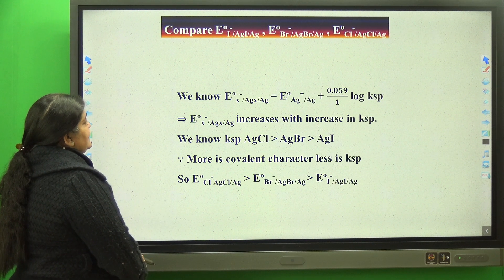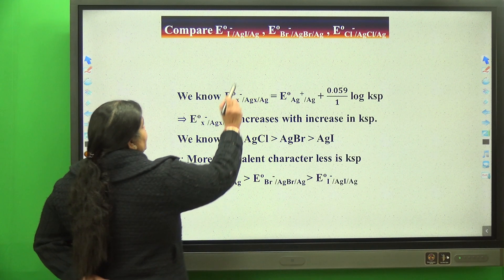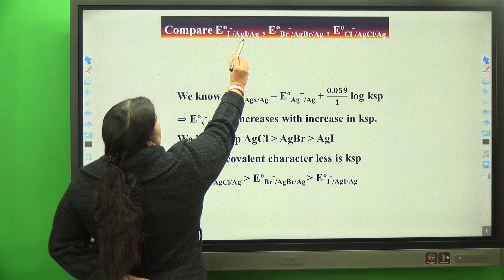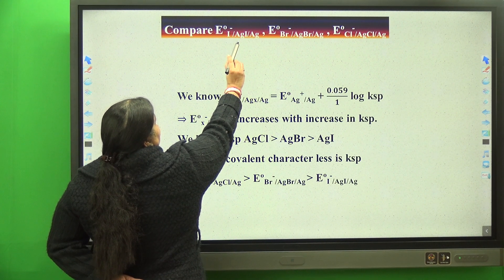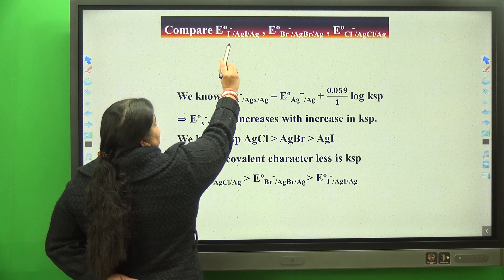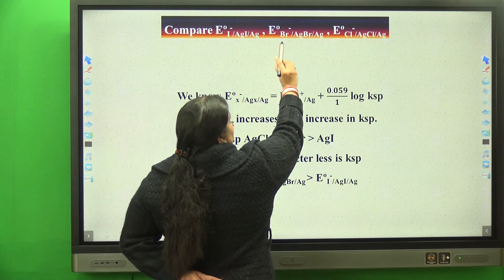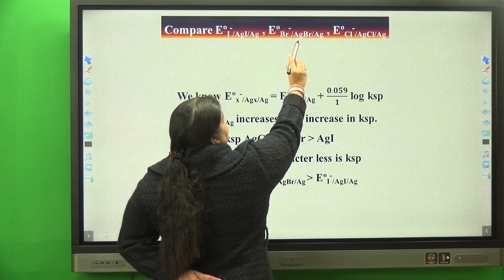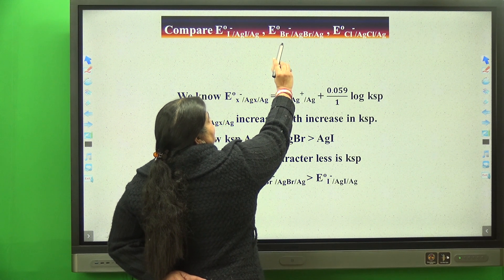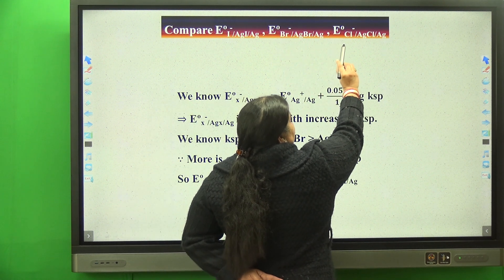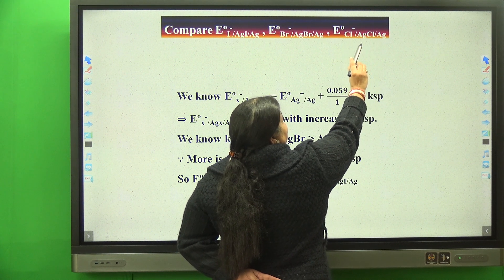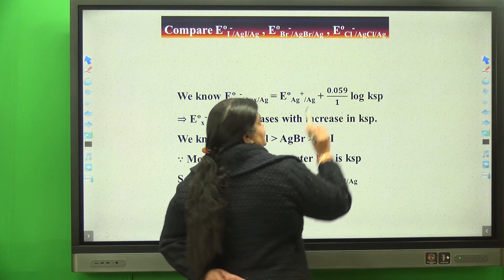Compare E° of silver electrode coated with silver iodide dipped in I⁻, E° of silver coated with AgBr dipped in Br⁻, and E° of silver coated with AgCl dipped in Cl⁻.